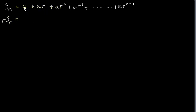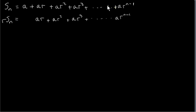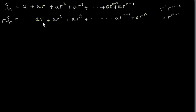If we multiply this series by r, we have r times a is ar, and I'm going to write that first term of this new series down so that these match up as like terms. Multiplying r by ar we get ar squared. Multiplying r by ar squared we get ar cubed. The second last term is ar to the power of n minus 2, so r times r to the power of n minus 2 is r to the power of n minus 1. Finally, r times the last term ar to the power of n minus 1 gives ar to the power of n. So we've effectively shifted this series one step to the right.